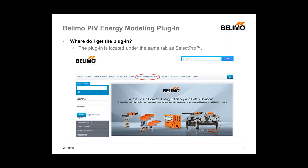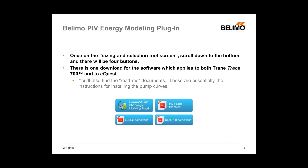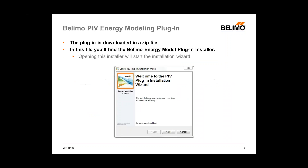The plug-in is available on the Volimo website under the tab marked Sizing and Selection Tool. When you get to the Sizing and Selection Tool screen, simply scroll down to the bottom and you'll find four buttons. There's one download for both TRACE 700 and eQuest, some read-me documents for installing the plug-in, as well as a product brochure.